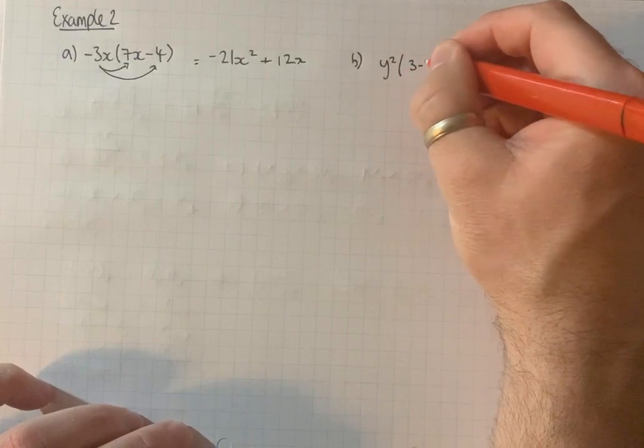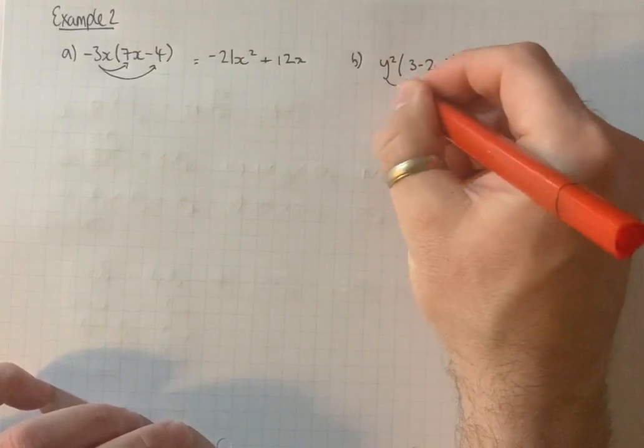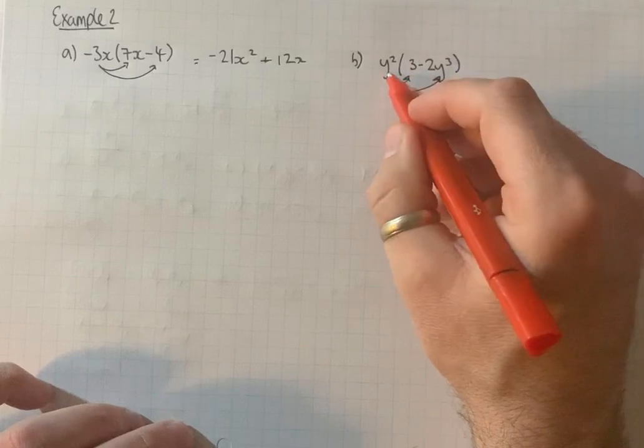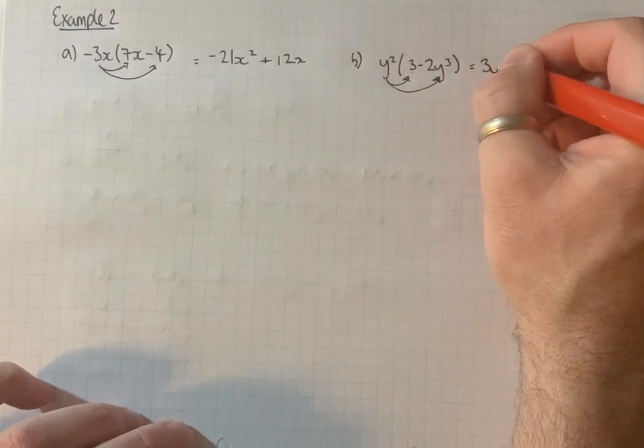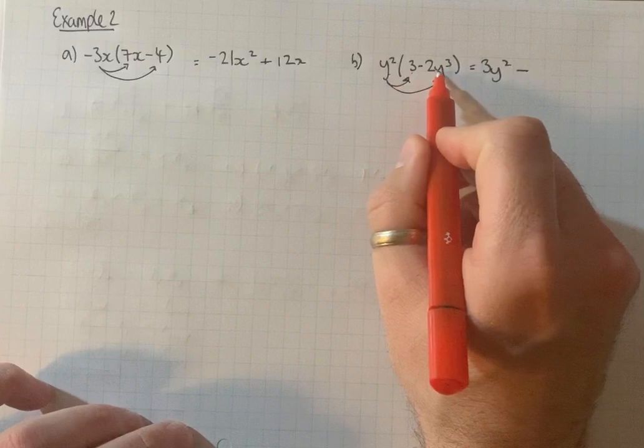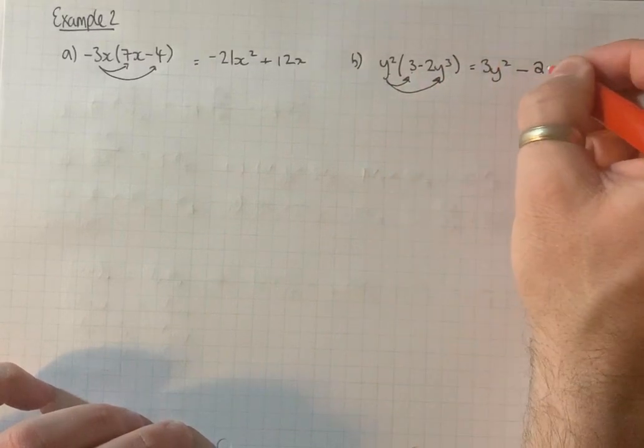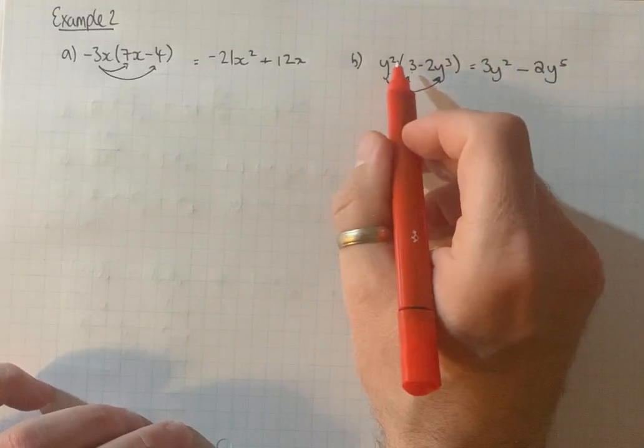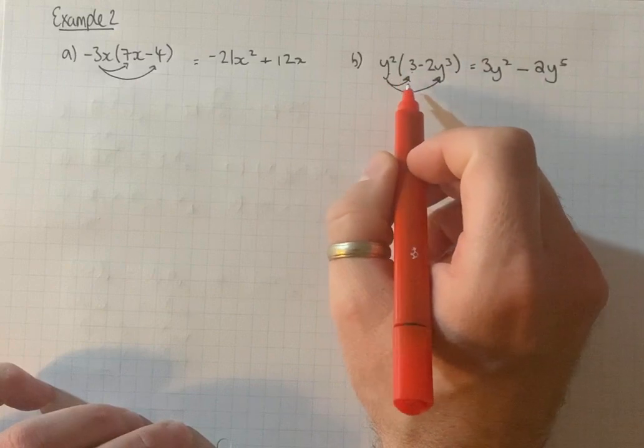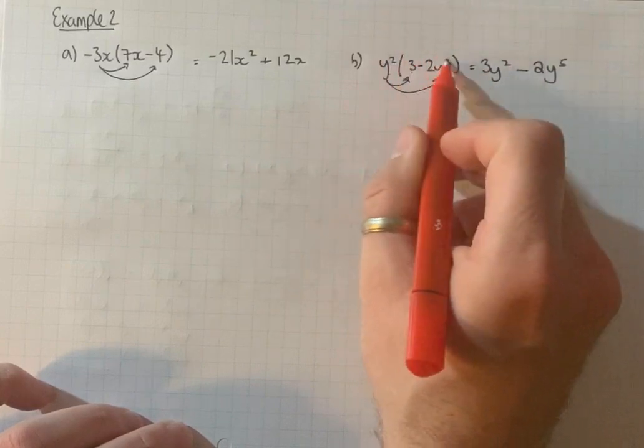Minus 2y squared times 3y squared minus 2y cubed. Y squared times 3 is 3y squared, minus y squared times 2y cubed is 2y to the 5. Again just using the multiplication rule, so we add the powers together.